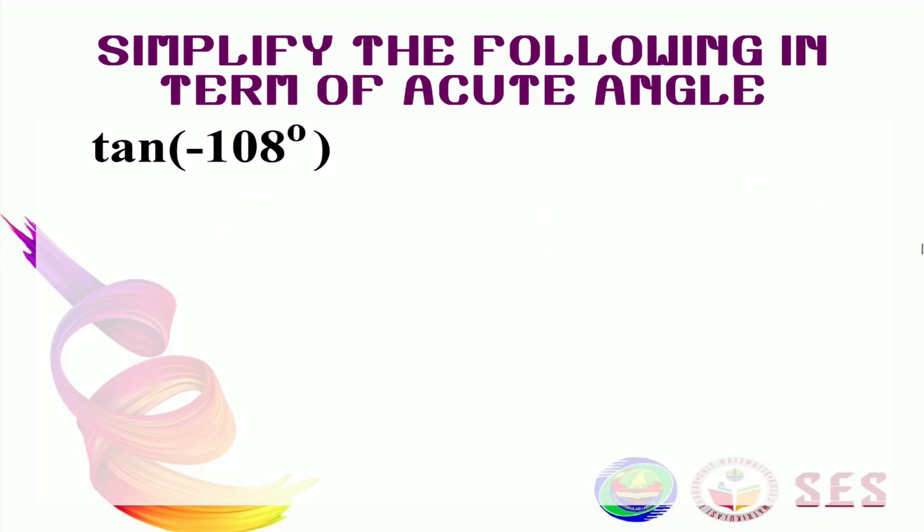Now this time, we're going to look at negative angle. Tan of negative 108 degrees. To test your understanding, I want you to try to simplify these three good terms first on your own. We will discuss this question again in our next video. But make sure to try it first.